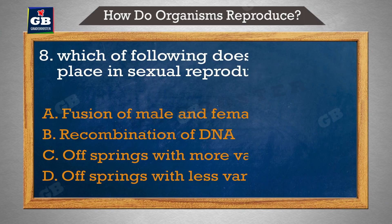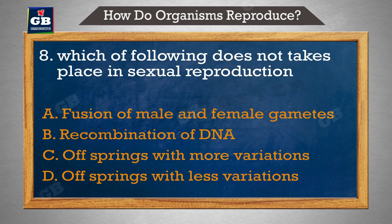Which of the following does not take place in sexual reproduction? — nimn mein se jo sexual reproduction mein nahin hoti hai. A. Fusion of male and female gametes, B. Recombination of DNA, C. Offsprings with more variations, D. Offsprings with less variations.